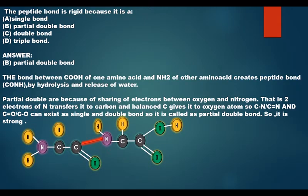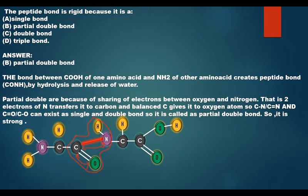The peptide bond is a rigid bond because it is a partial double bond. The bond between the COOH of one amino acid and the NH2 of another forms a peptide bond, releasing water. It is a partial double bond because electrons are shared between oxygen and nitrogen — the lone pair of nitrogen transfers to carbon, which then transfers to oxygen, so the bond alternates between C–N single bond and C=N double bond (and C=O / C–O), making it stronger than a single bond.